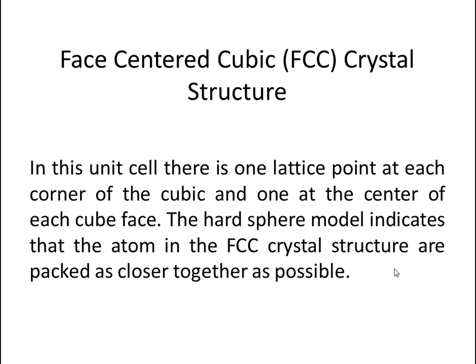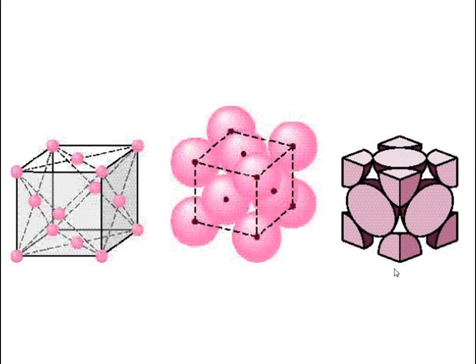Let's talk about the face-centered cubic (FCC) crystal structure. In this unit cell there is one lattice point at each corner of the cube and one at the center of each cube face. The hard-sphere model indicates that atoms in the FCC crystal structure are packed as closely together as possible.